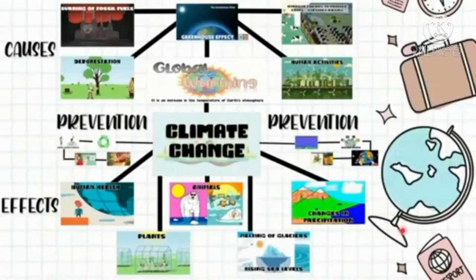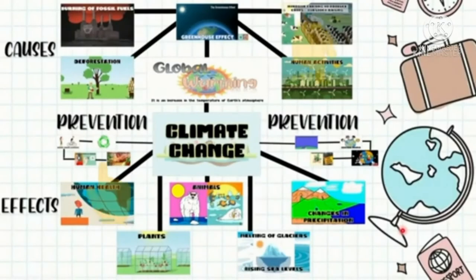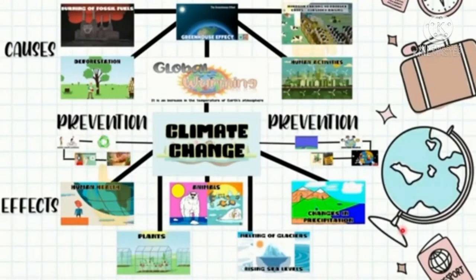Based on the concept map, we can say that climate change is the change in usual temperature or the rise in average surface temperature on Earth. So, what can we do to help lessen these effects?